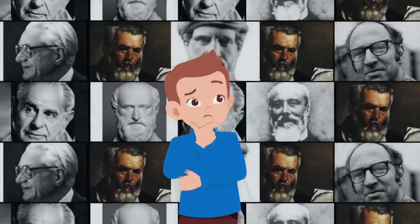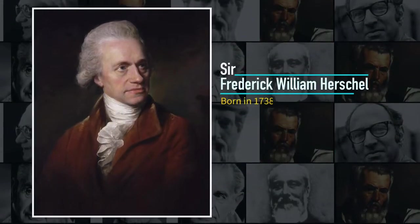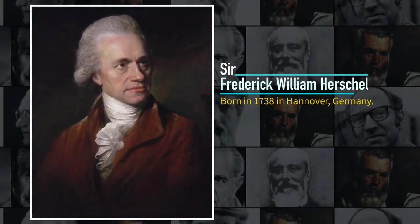One of them was Sir Frederick William Herschel, born in 1738 in Hanover, Germany. Herschel became well known as both an astronomer and a musician. He moved to England in 1757.